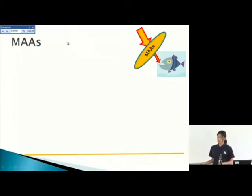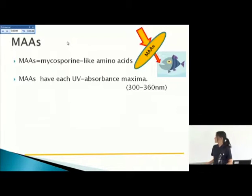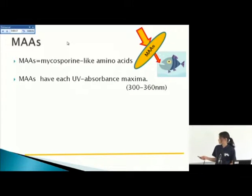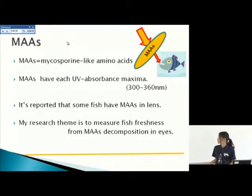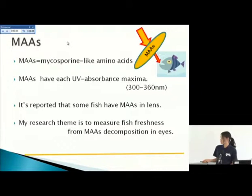What's MAS? MAS means mycosporine-like amino acids. MAS have each UV absorbance maximum from 300 to 360 nanometers. It's reported that some fish have MAS in their lenses, so MAS protects the fish eyes from dangerous UV effects. My research team aims to measure fish freshness from MAS composition in the lens.